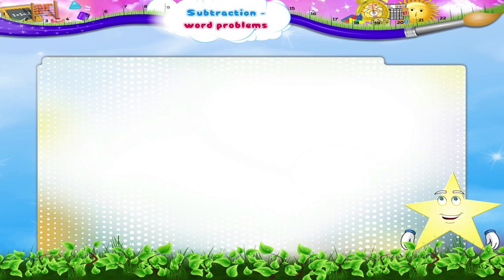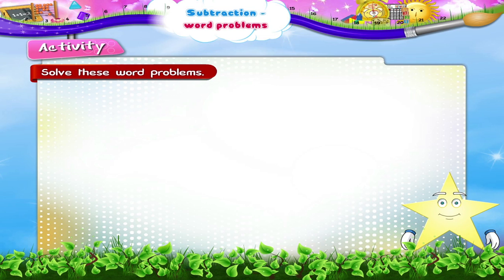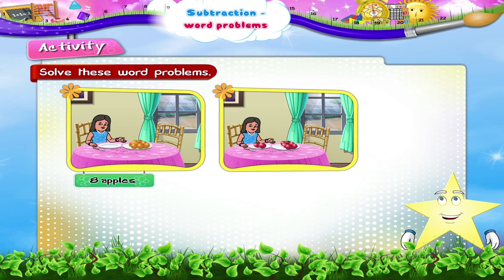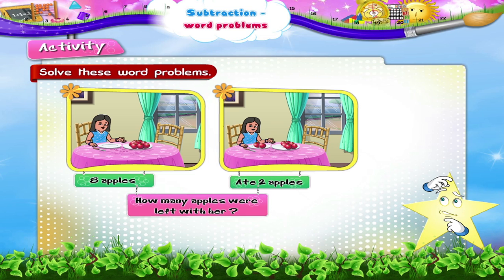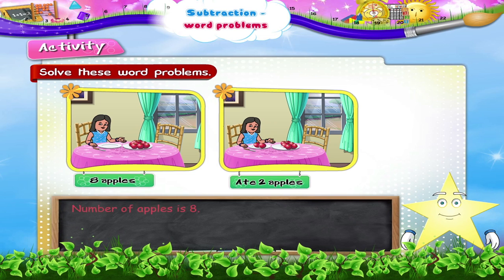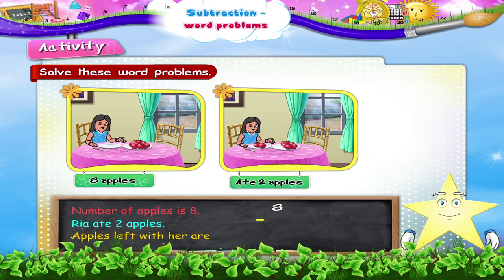And now let us do an activity together. We have to solve these word problems. Riya had eight apples. She ate two. How many apples were left with her? Number of apples is eight. Riya ate two apples. Apples left with her are eight minus two, which is six.